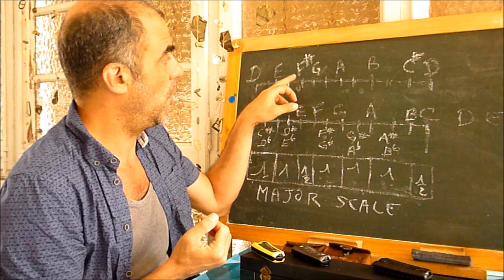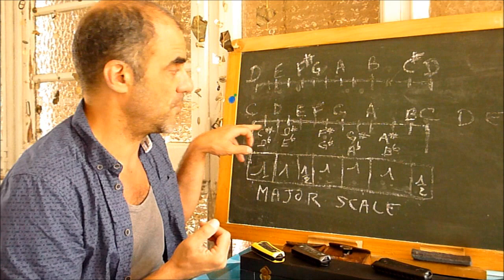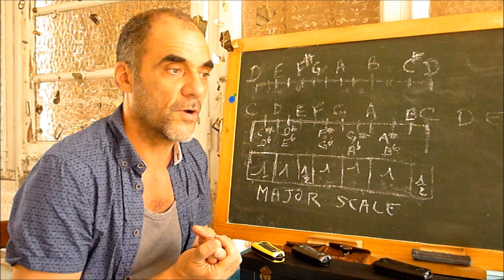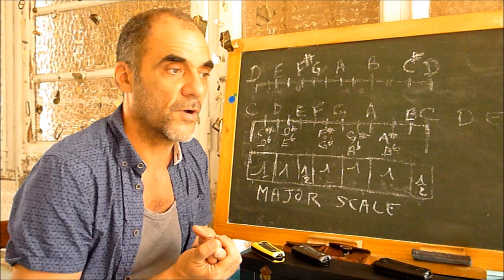We will learn further how to obtain the missing notes on a harmonica. This is work we will do later, because it involves using the mouth, the tongue, and the throat to change the frequency of the note.